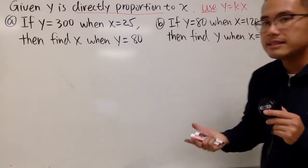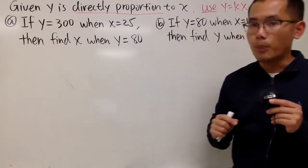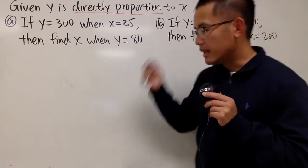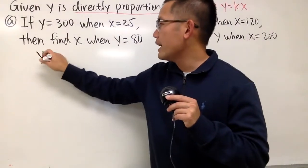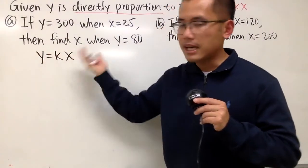And keep in mind, k is what we call the constant of proportionality. Now, start with the first one, and let me just write this down again. y equals k times x.